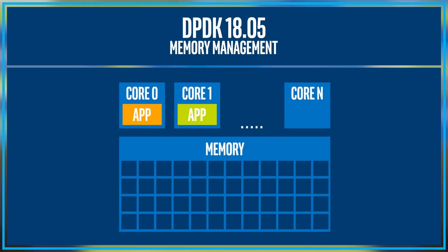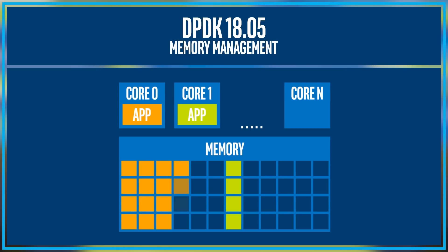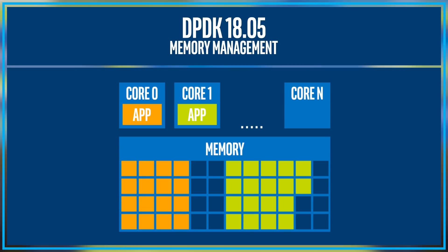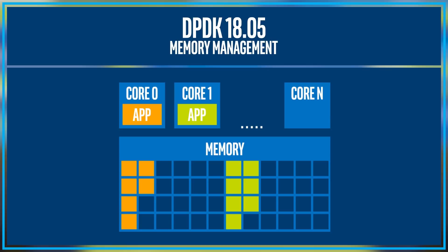One of the biggest changes in DPDK 1805 is in the area of memory management. The memory in use by DPDK now changes dynamically as the needs of the application change. The initial memory footprint of a DPDK app starting up will be very small, allowing for faster startup. But then, as the app requires more memory for its data structures and packet buffers, it will acquire them from the operating system. Similarly, as the structures are no longer needed and released by the application, the memory used is released to the operating system.